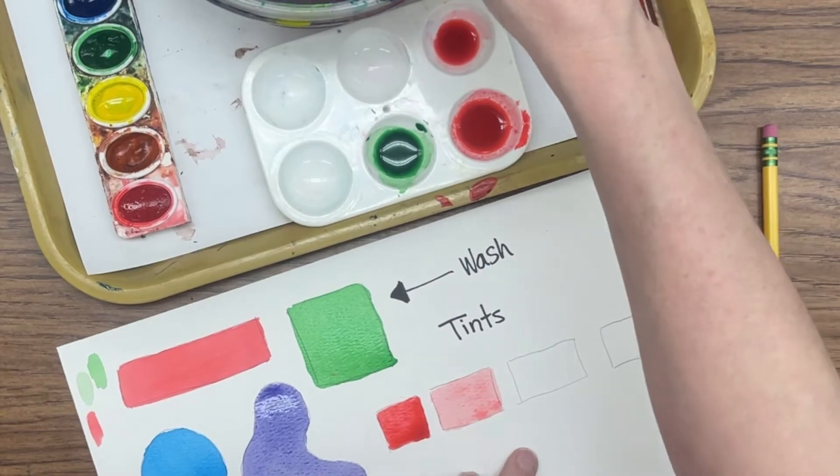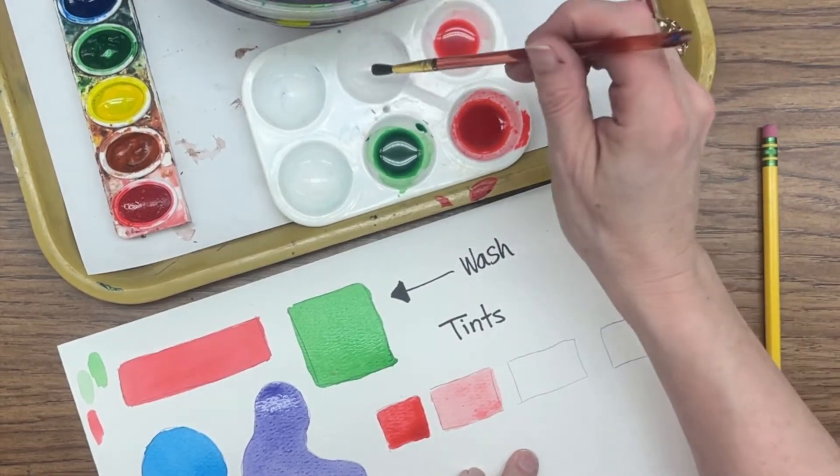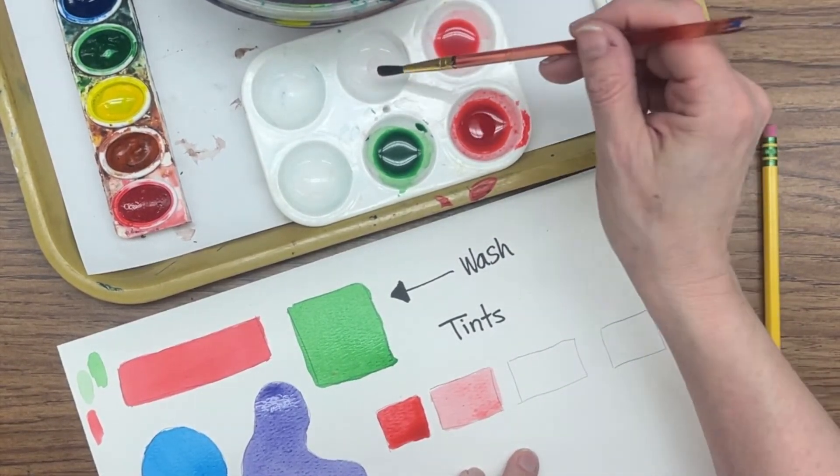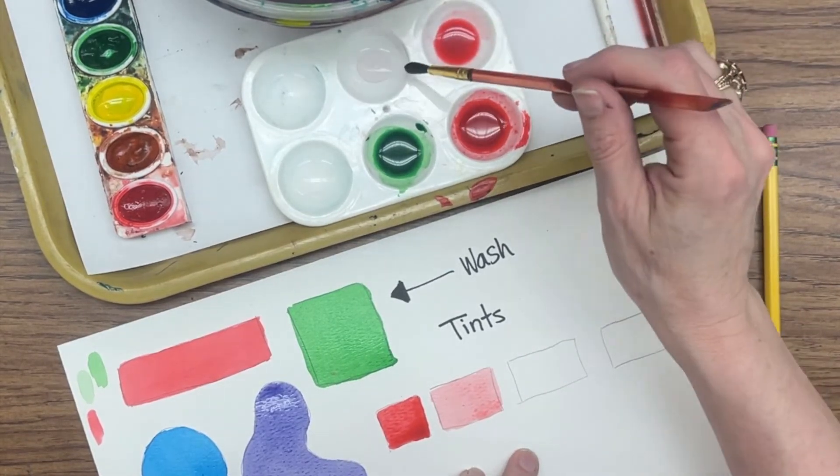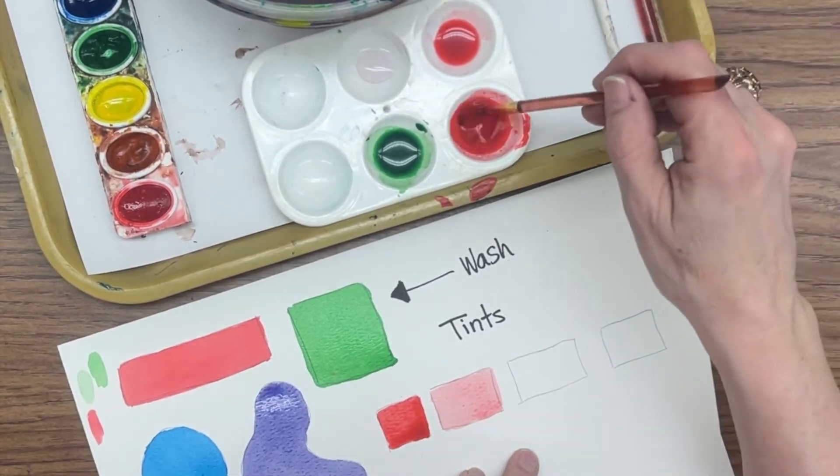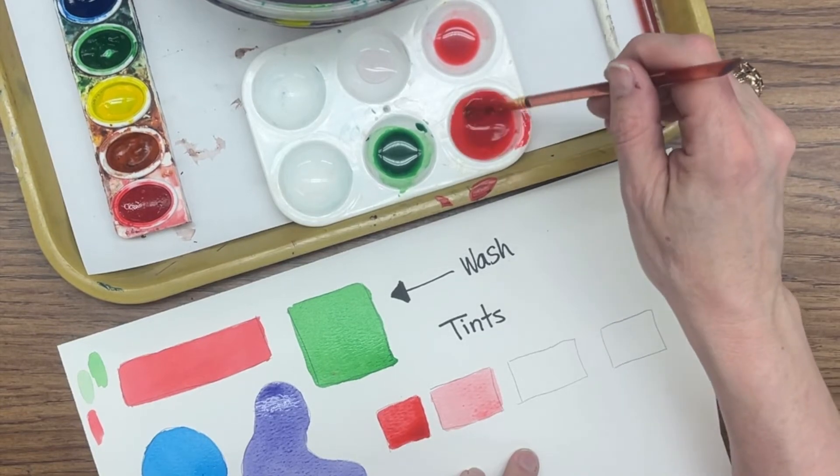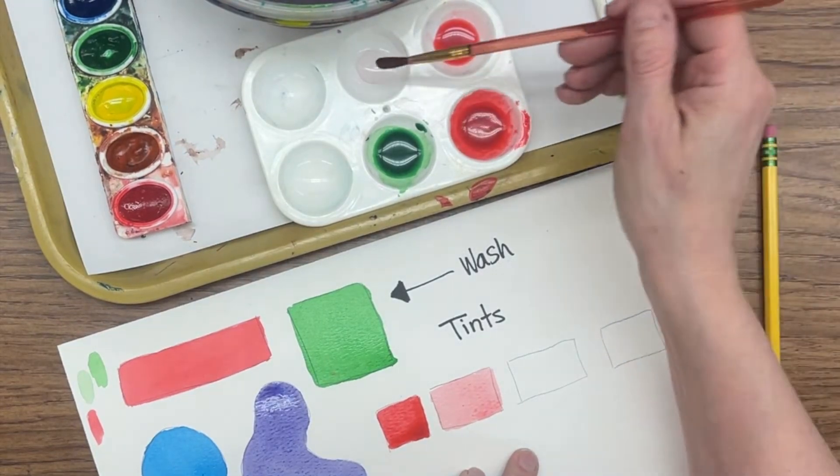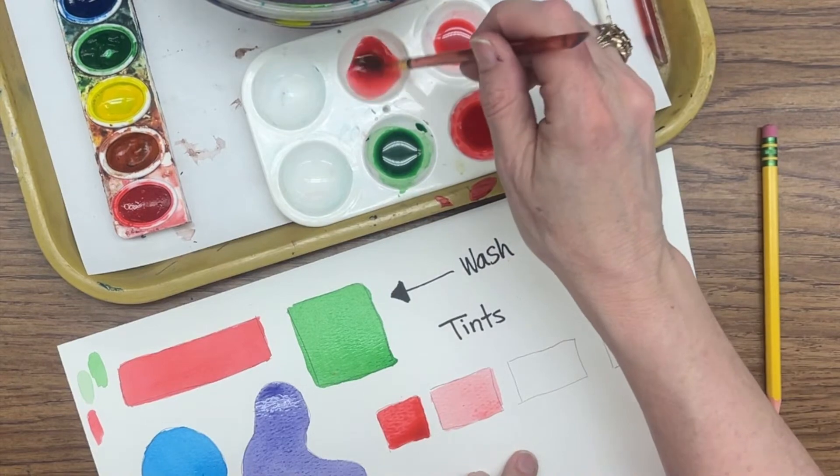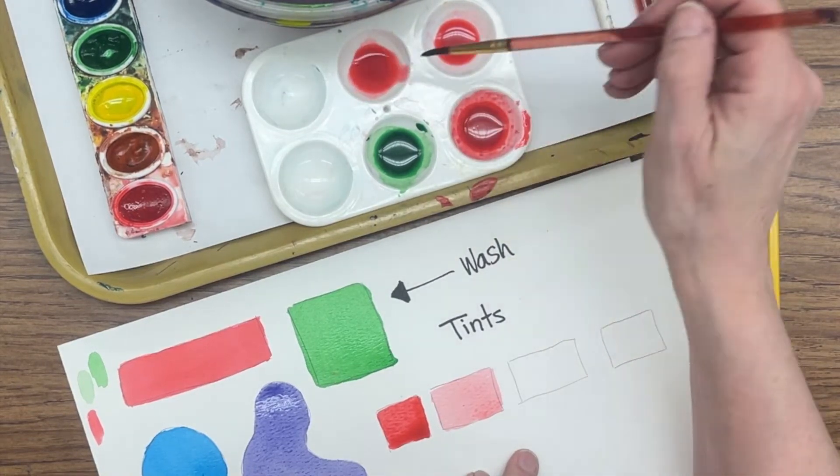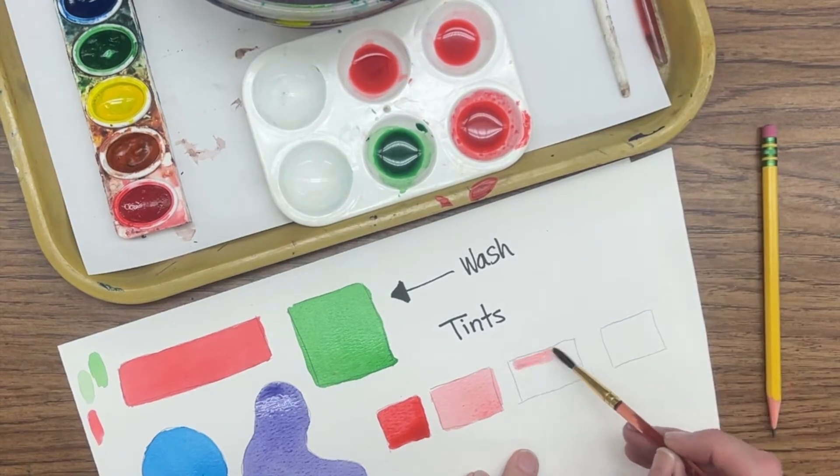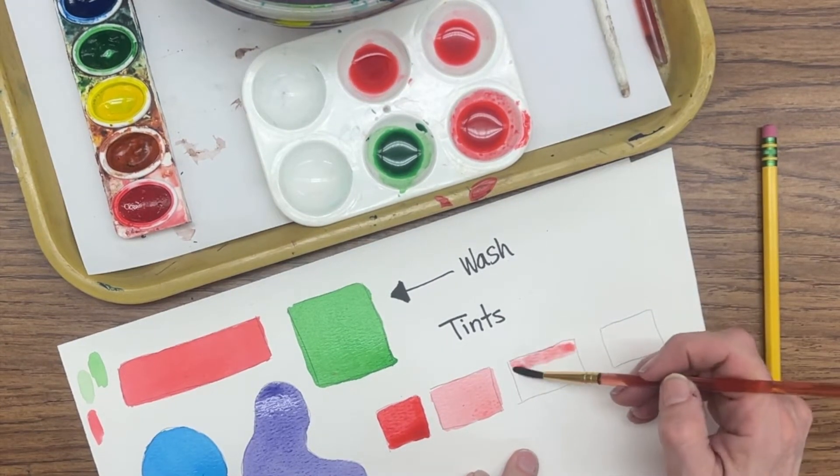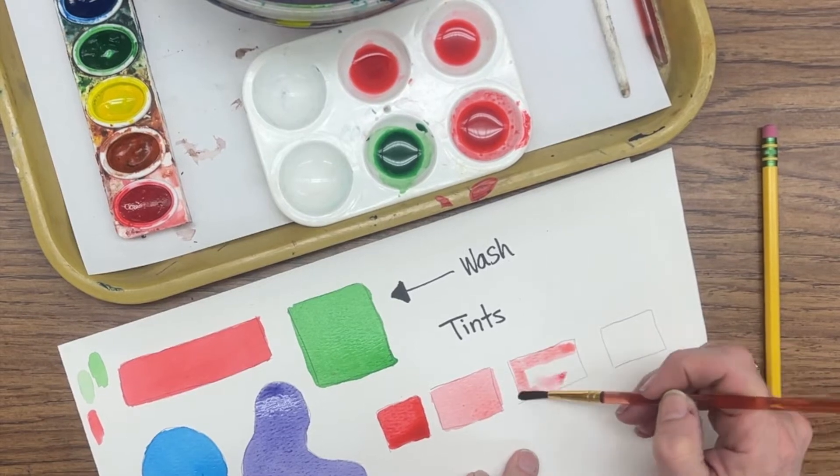Then for my second tint, I'm going to put four drops of water. Three, four. And I'm going to get one brushful of paint. So it's about the same amount of paint that I had in that one, but I have more water. So it should be lighter.